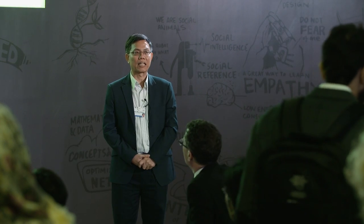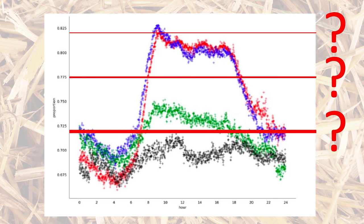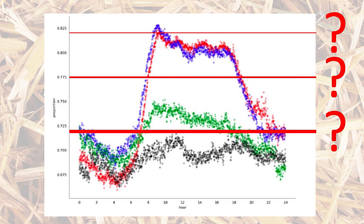So one common way to do anomaly detection is to set load thresholds that state if your load goes above a certain threshold, it's probably an attack. But is this a satisfactory solution? It's very hard to set all these thresholds and high load doesn't necessarily imply malicious traffic.